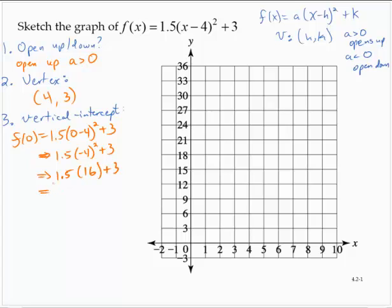1.5 times 16 is 24. So I have 24 + 3, which is 27. So then the vertical intercept is (0, 27).